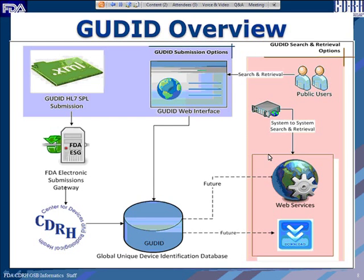On the right-hand side, the pink box has GoodID search and retrieval options. Public users can search the GoodID database via the Web Interface, and in the future web services and download capability are planned but currently under development. The search and retrieval option has been disabled because there are not yet enough records in the system — as of yesterday, about a thousand records. Once sufficient records exist, it will be opened for public access.